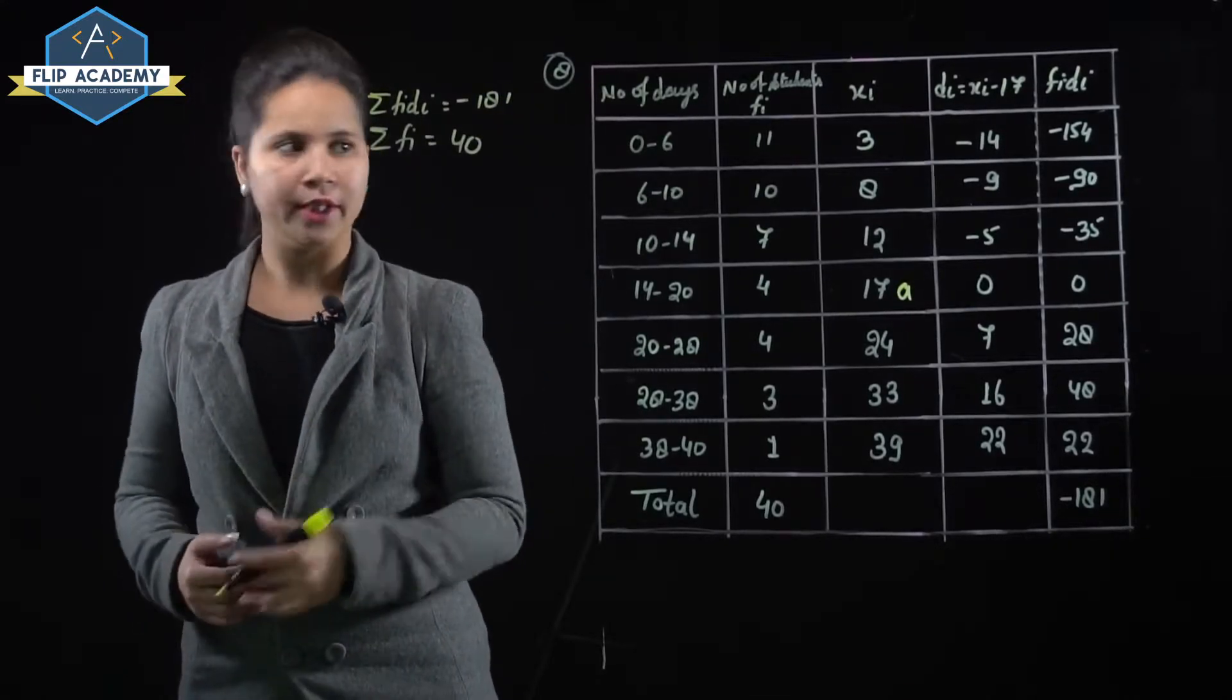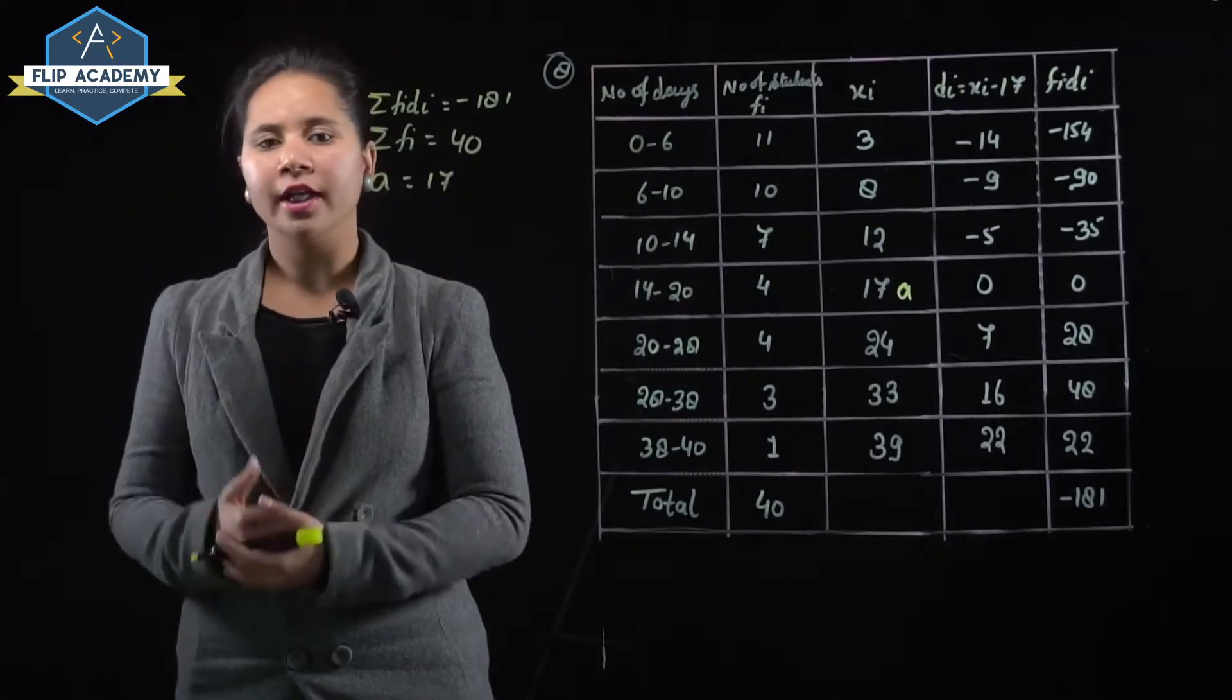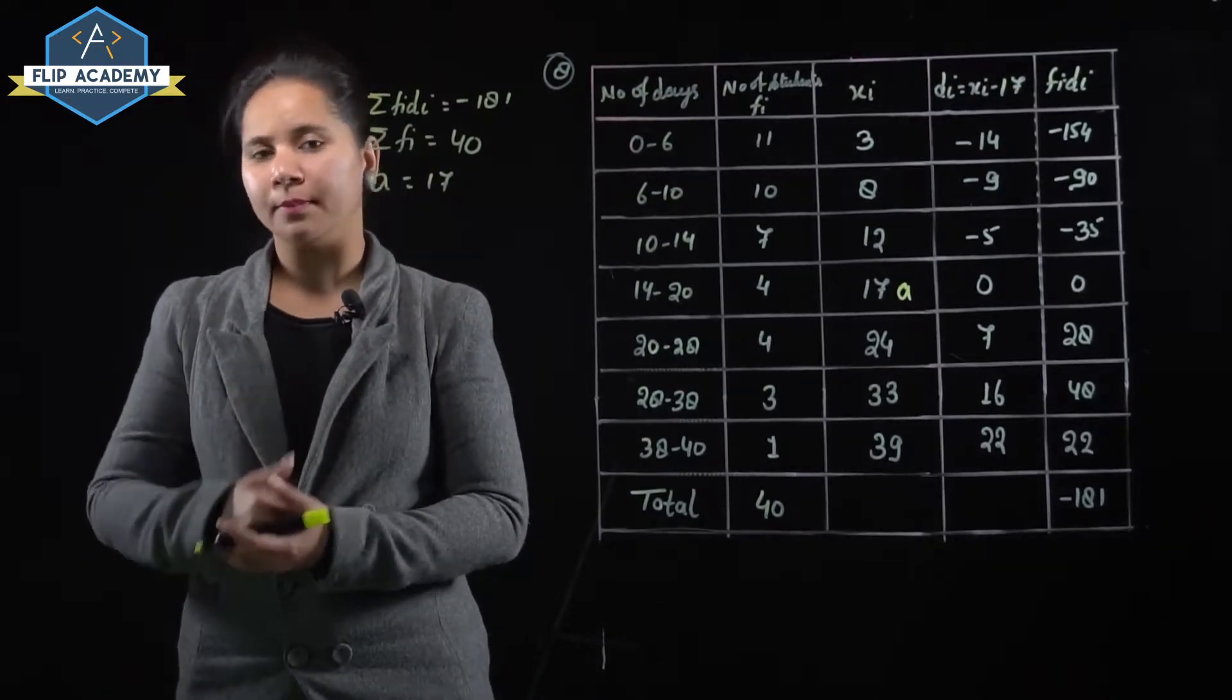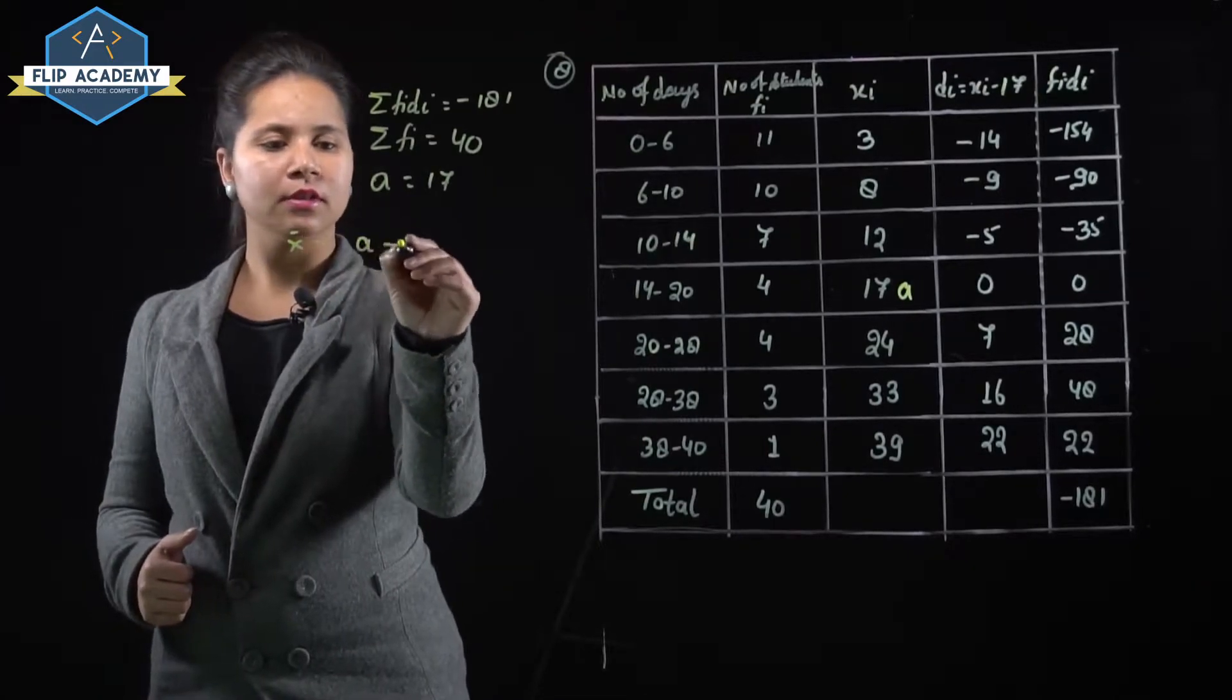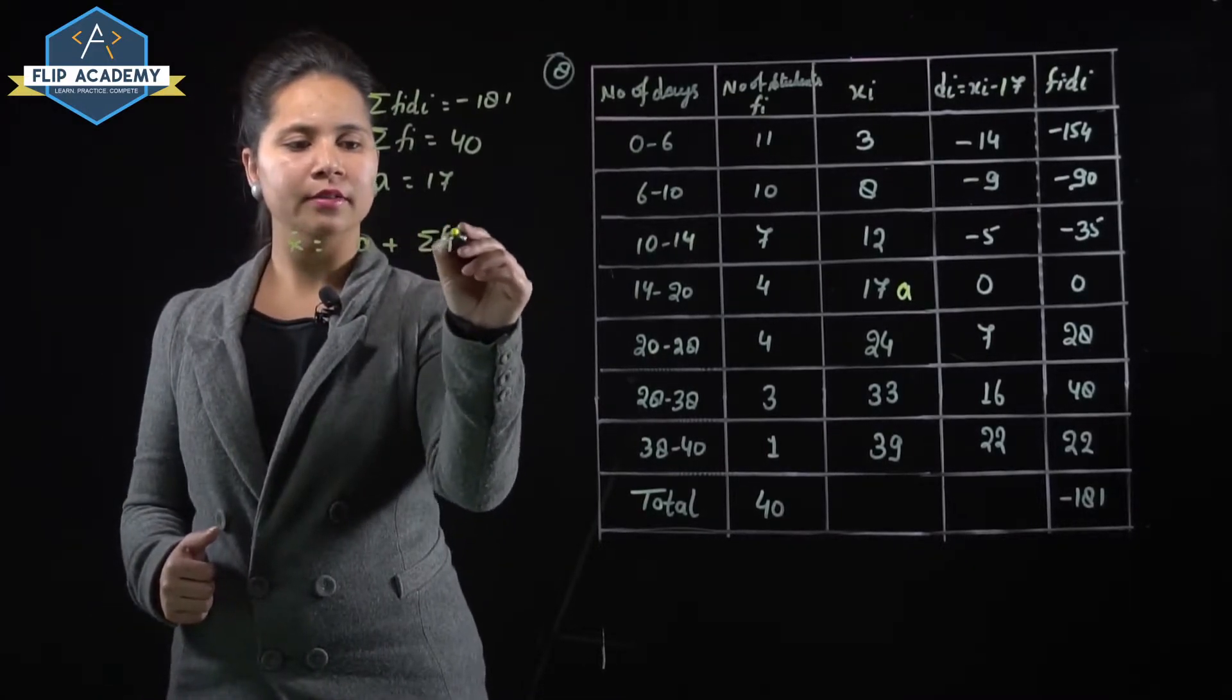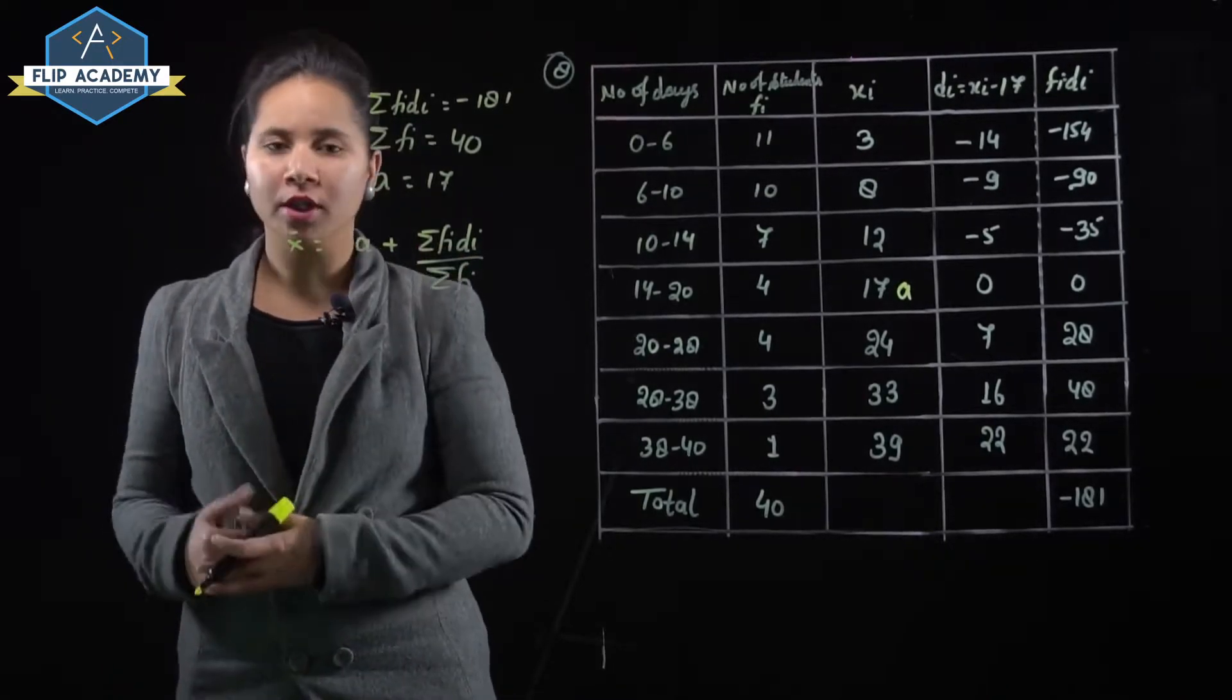Sigma fi equals 40. A equals 17. Now we need to find out the number of days for which a student is absent. Mean equals a plus sigma fi di upon sigma fi.